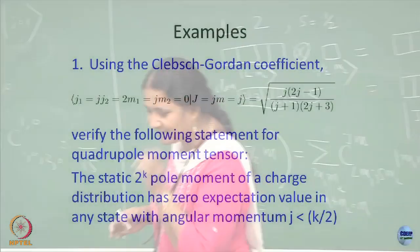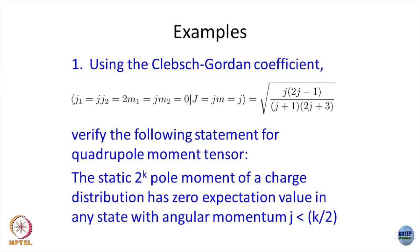I also want you to appreciate — not just as a problem — that without even doing a computation you can tell the experimentalist: you will never see it in the lab, it will be 0. That kind of input you can give to the experimentalist. That is why the Wigner-Eckart theorem is really powerful — it is not just a passing theorem. It is about working out the CG coefficient and looking at the ratios. The statement is: the 2k-pole moment expectation value for j less than k/2 will vanish, so you do not even look for those j values in the lab.